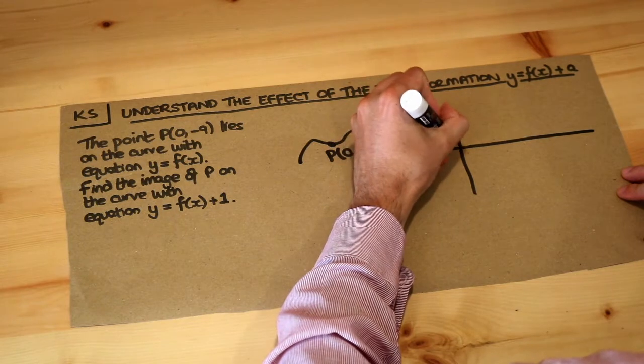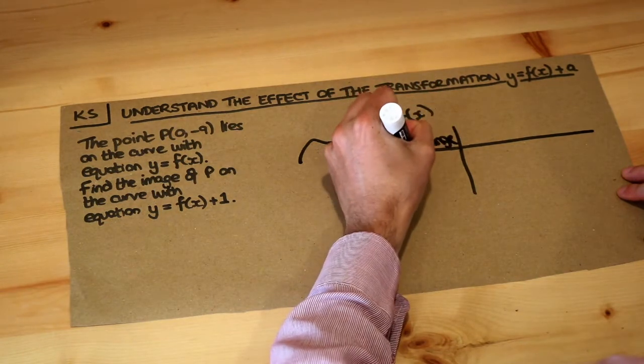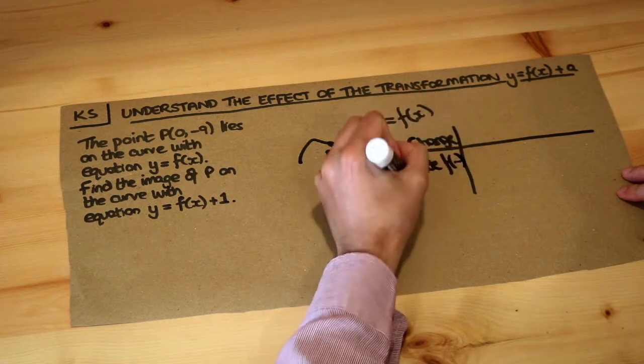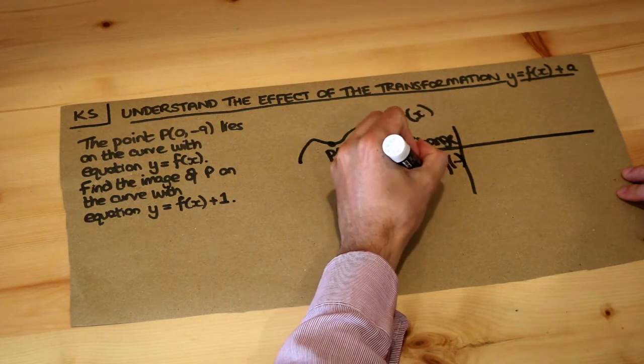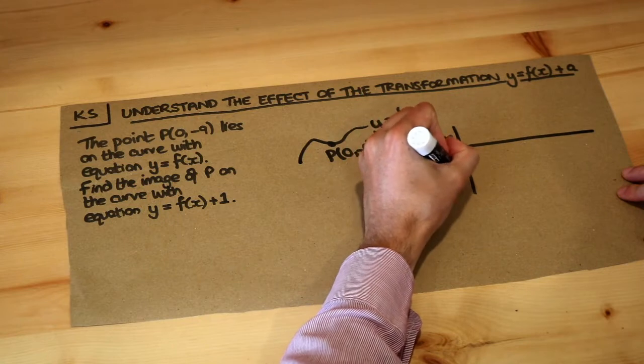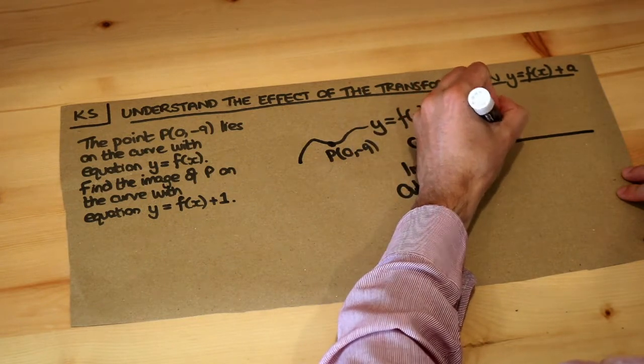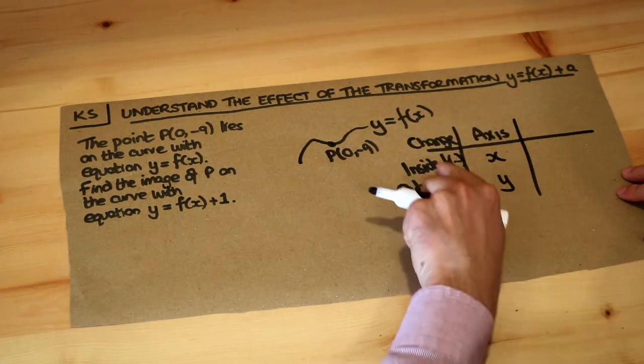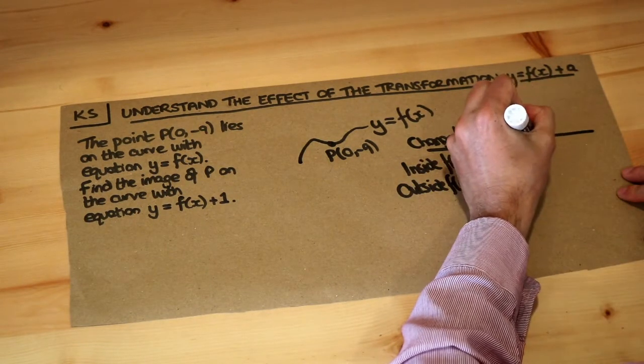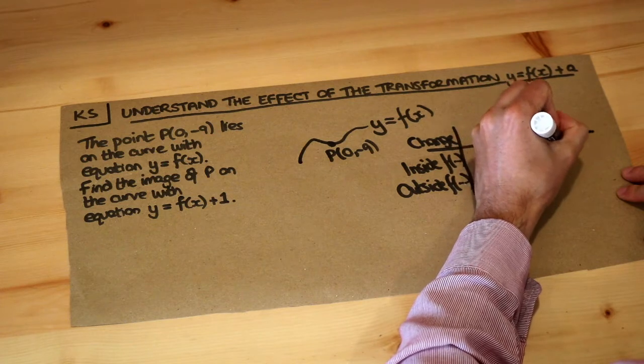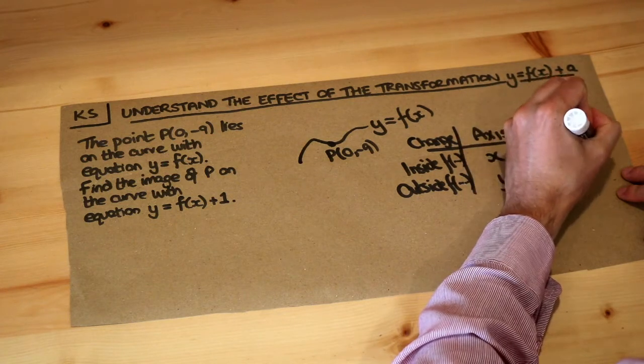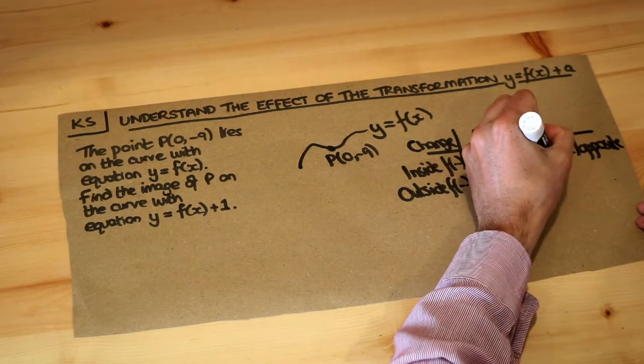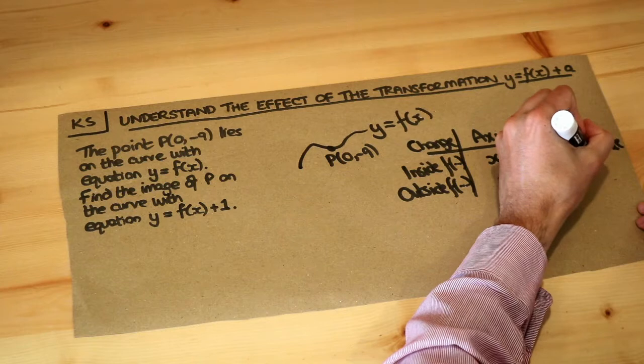We see if the change to the expression was inside the function or outside the function, and depending on the answer to that question, it either affects the x-axis or the y-axis. If the change was inside the function we do the inverse or the opposite of what we expect. If the change was outside the function you do what we expect, so not the inverse.